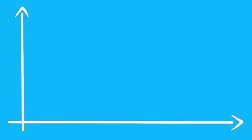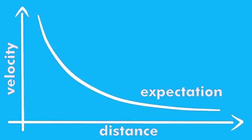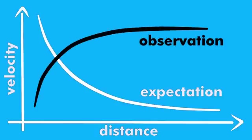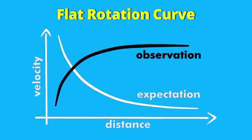If you calculate the rotation speeds as a function of the distance from the center for normal gravity, you find that it should drop with one over the square root of the radius. Trouble is, in most observations, it doesn't drop. Rather, the rotation speed first goes up, and then remains more or less constant. This is called a flat rotation curve.